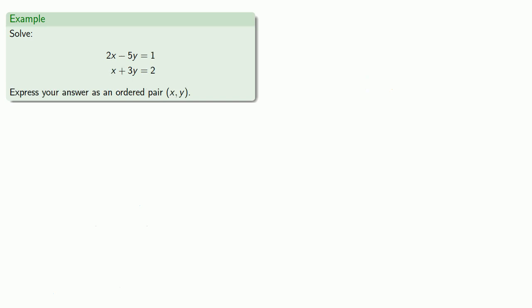Let's take a look at another system. We'll note that the coefficients of x in the two equations are 2 and 1. So, we'll multiply the first equation by 1 and the second by negative 2, and add.